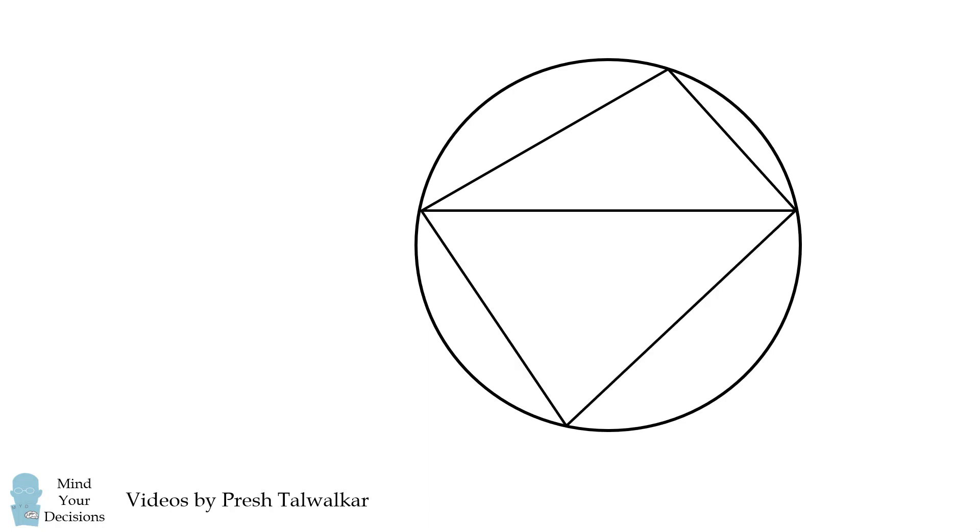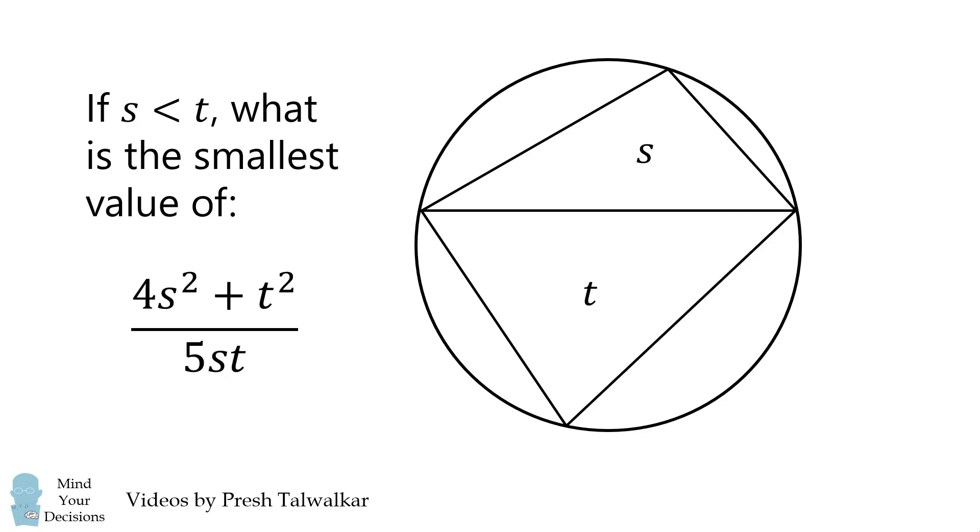Mind your decisions. I'm Presh Talwalkar. In a circle two triangles are inscribed as shown with areas of s and t. If s is less than t, what is the smallest value of 4s squared plus t squared all over 5st?